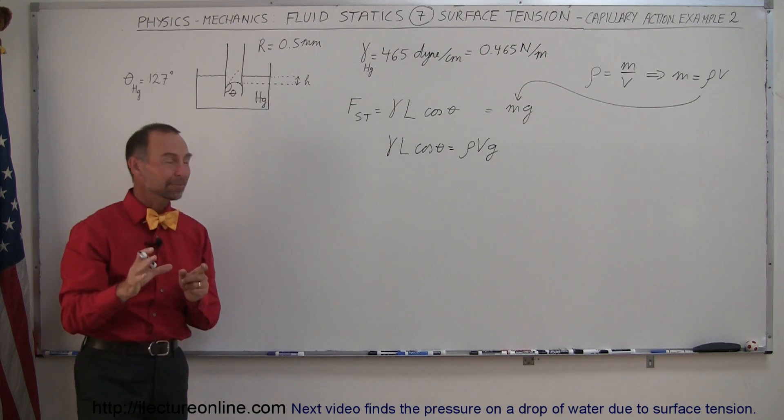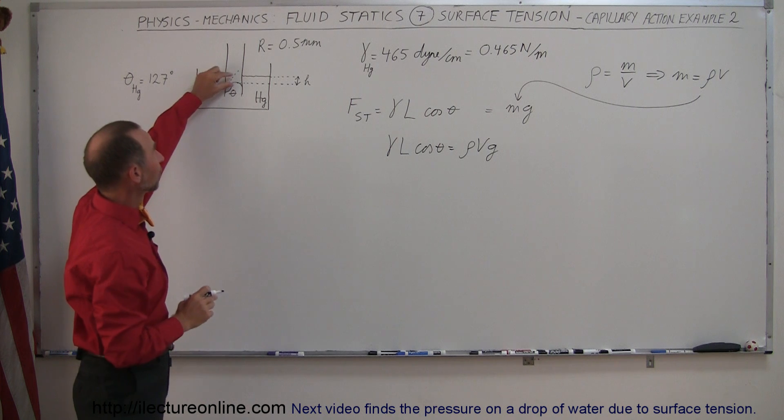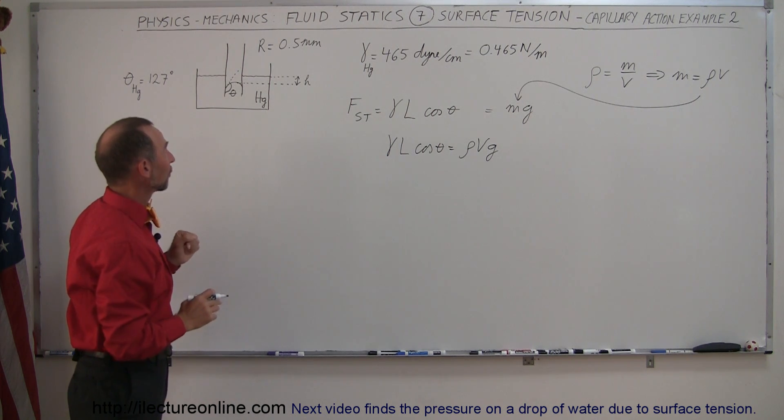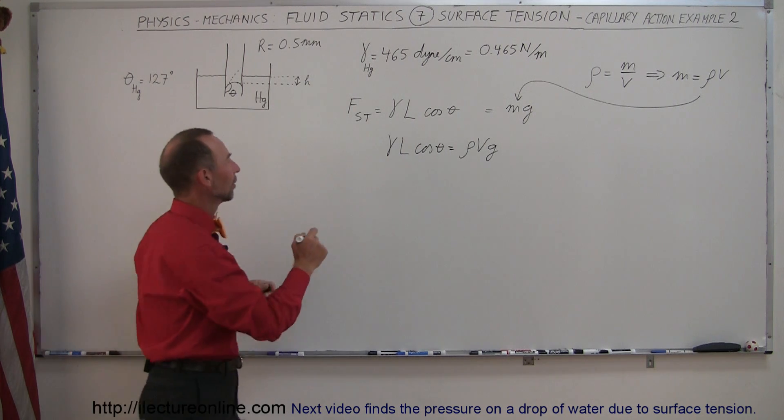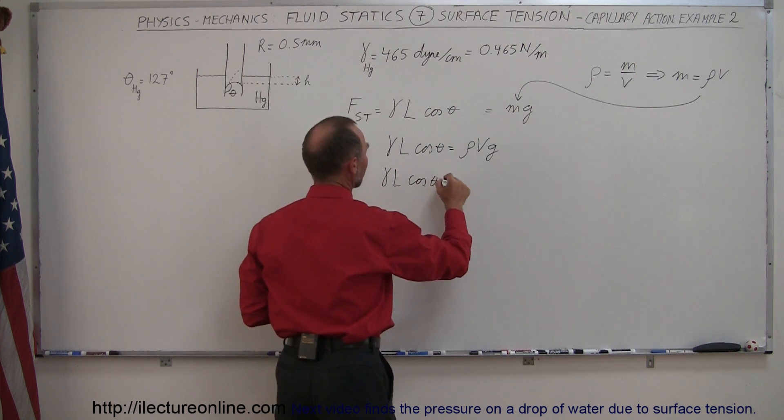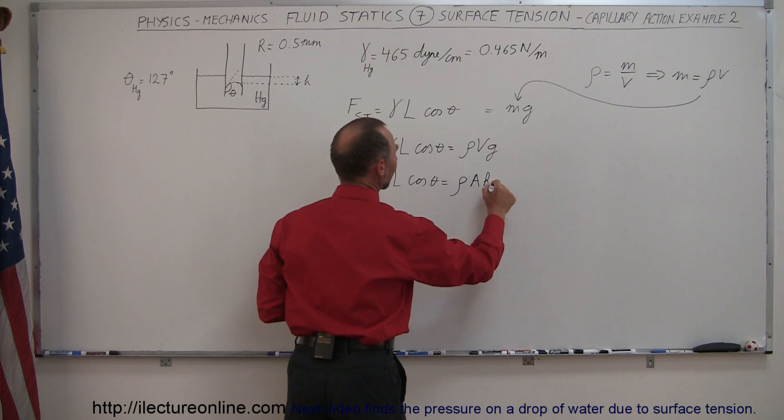Well, I don't see an h yet, but the h is kind of buried inside that volume because the volume of this evacuated space or region inside the capillary tube is going to be the surface area or the cross-sectional area times the height. So we can write this as gamma l cosine of theta is equal to rho times the cross-sectional area times the height times g.